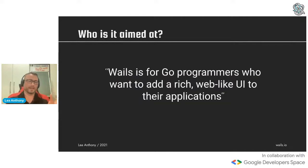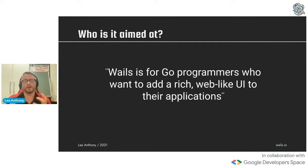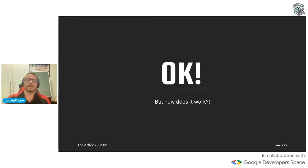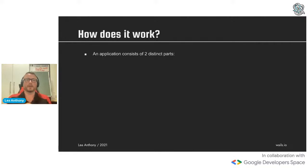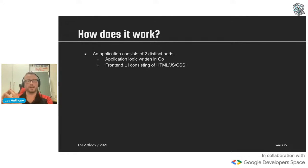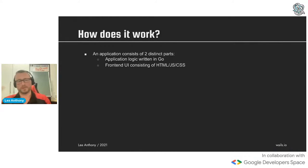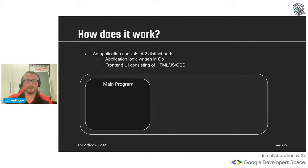So who is this project aimed at? It's aimed at Go programmers who are competent with Go - who've maybe built libraries or applications, usually CLIs - but want to put rich web-like UIs in front of their applications. The aim of the project is to make that as easy as possible. A general application will consist of two distinct parts: your application logic written in Go, and your front-end UI consisting of HTML, JavaScript, and CSS - pure HTML, JavaScript, and CSS with no special pre-processing.